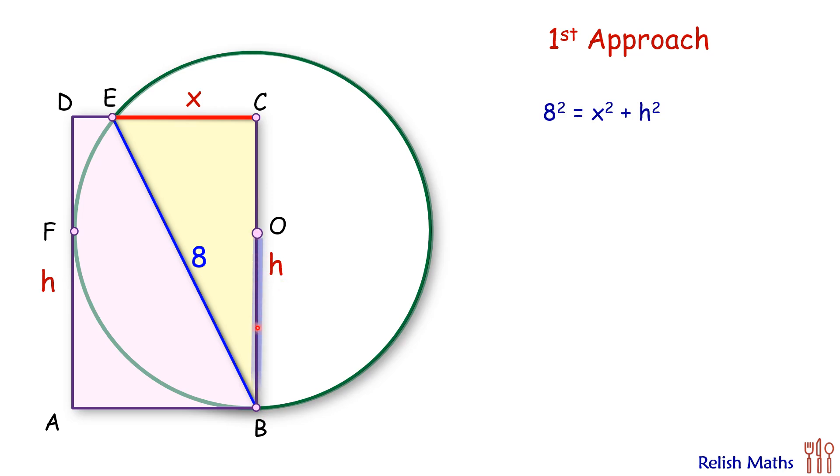Now let's assume the radius of the circle is R cm. Thus this height CO will be h minus R. And if we join EO, EO is also the radius of the circle.